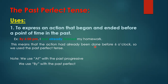So we use the past perfect tense here. Note that we use 'at' with the past progressive when talking about an action that took place or was taking place at a specific point in time. But we use 'by' with the past perfect tense. So I do not say 'at 6 p.m.' — I say 'by 6 p.m.', meaning before that time I had done that action. The first usage of the past perfect tense is to express an action that began and ended before a specific point in time.